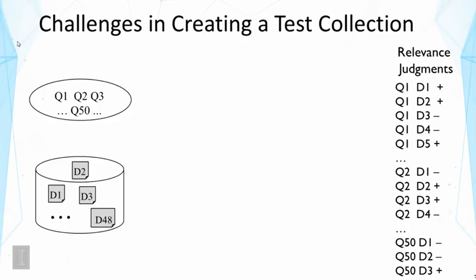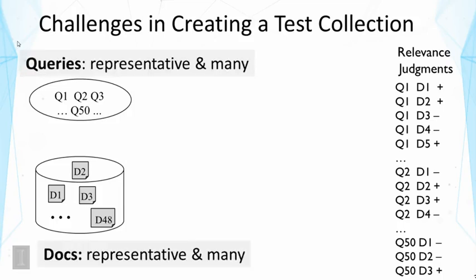In order to create a test collection, we have to create a set of queries, a set of documents, and a set of relevance judgments. Each of these is actually challenging to create. First, the documents and queries must be representative — they must represent the real queries and real documents that users handle. We also have to use many queries and many documents in order to avoid biased conclusions.